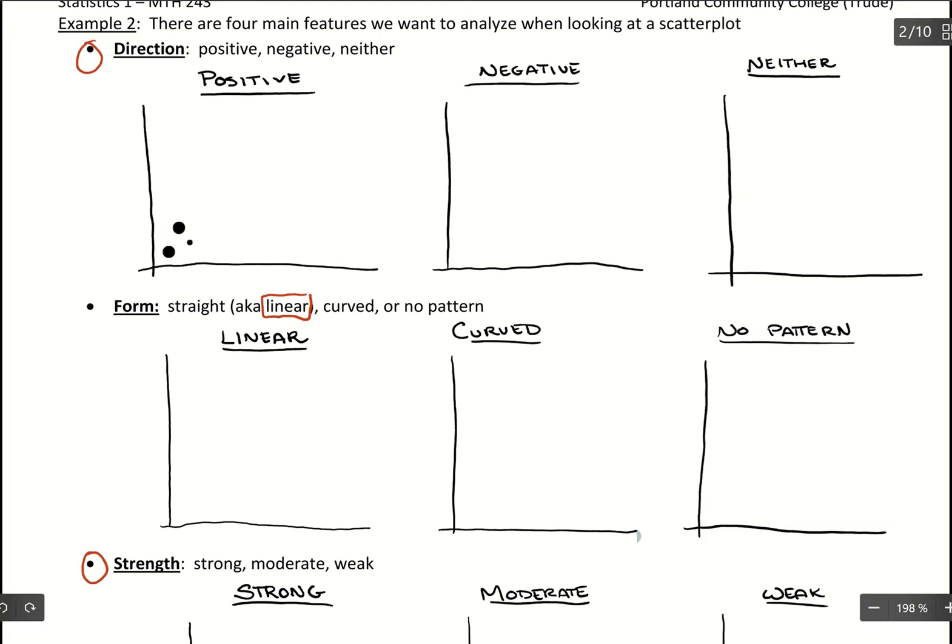So maybe something like this, where the key is that if you imagine a line going through that data, it would have a positive slope to it.